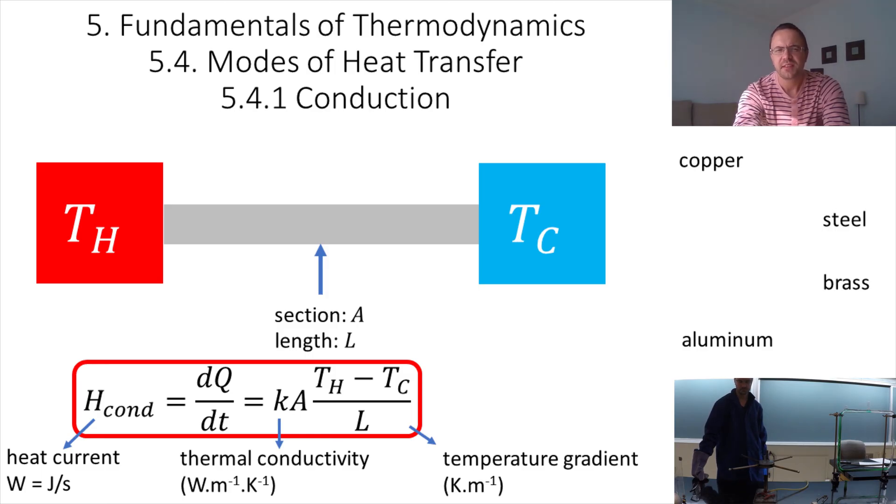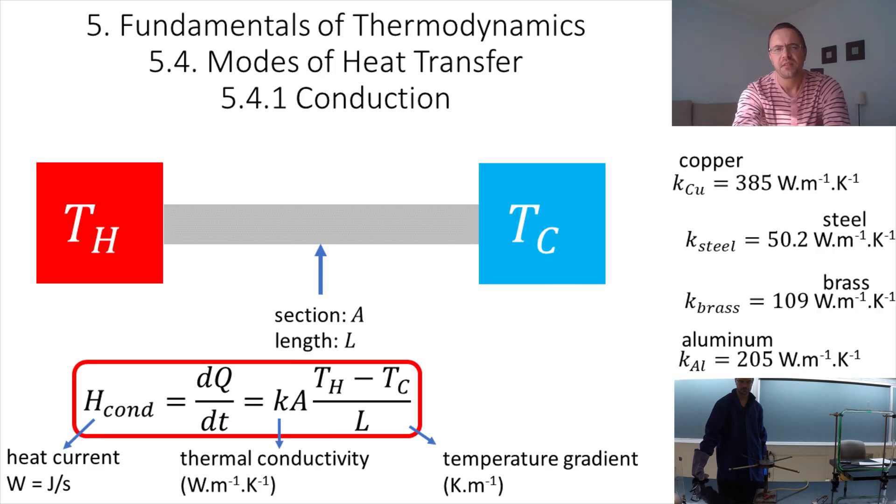For each material, the coefficient of thermal conductivity will be different. For copper, it is 385 watts per meter per kelvin. For steel, it is 50.2 watts per meter per kelvin. For brass, it is 109 watts per meter per kelvin. And for aluminum, it is 205 watts per meter per kelvin.